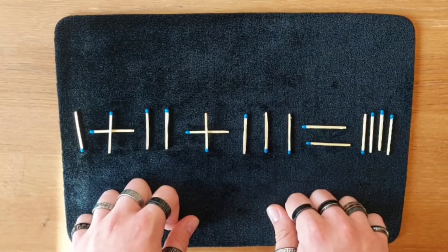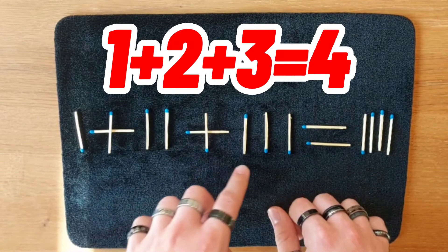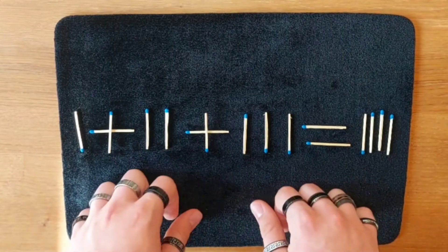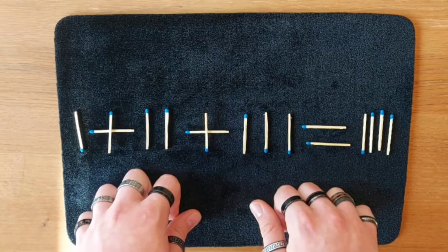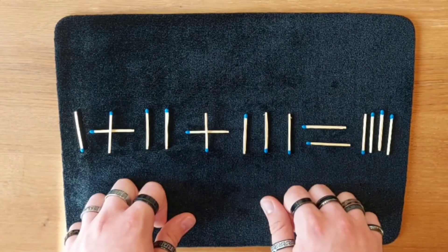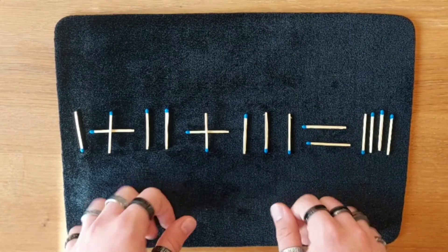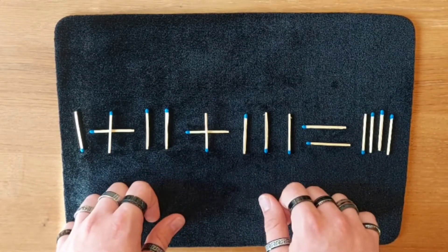Now as you see this riddle is an equation so 1 plus 2 plus 3 equals 4. But as many of you may think this isn't the right answer. And your task is to correct this equation by only moving one match and you can't change the result.